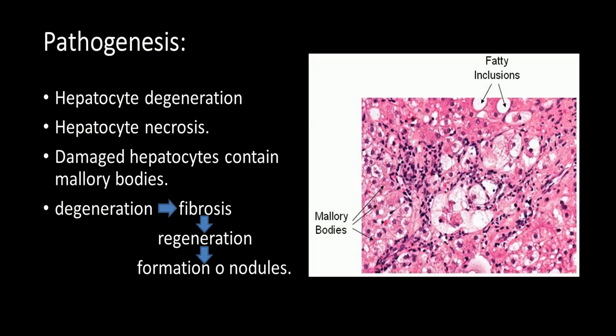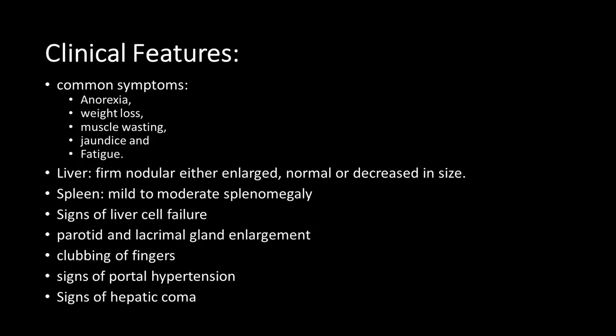Pathogenesis: the early insult to the liver includes hepatocyte degeneration and necrosis. Damaged hepatocytes contain Mallory bodies. The degeneration causes fibrosis, followed by regeneration, resulting in the formation of nodules.